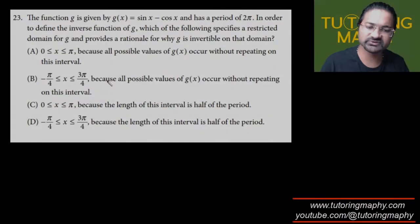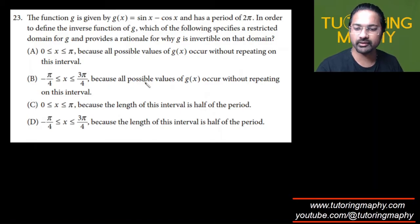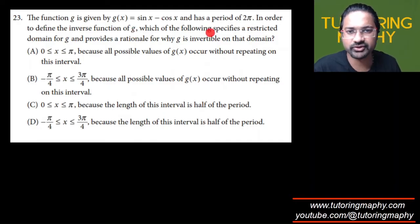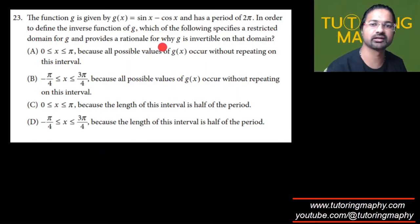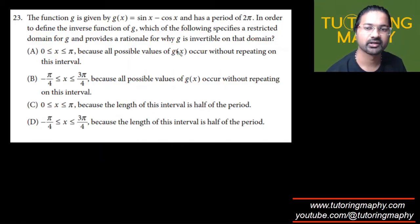The function g(x) is given by sine x minus cos x, and it has a period of 2π. In order to define the inverse function G, we need to determine which of the following specifies a restricted domain of G, provide a rationale, and explain why G is invertible on that domain.